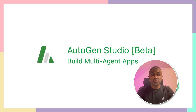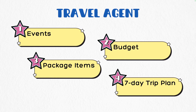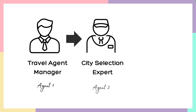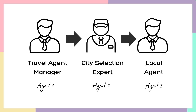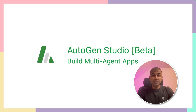Hi everyone, I'm really excited to show you Autogen Studio. In this we are going to create AI travel agents which can create events, find the budgets, find the package items, and prepare a seven-day trip for you. We have a travel agent manager, a city selection expert, and a local agent. They are working together in the Autogen user interface to prepare a travel plan for us. I'm going to take you through step by step on how to do this.